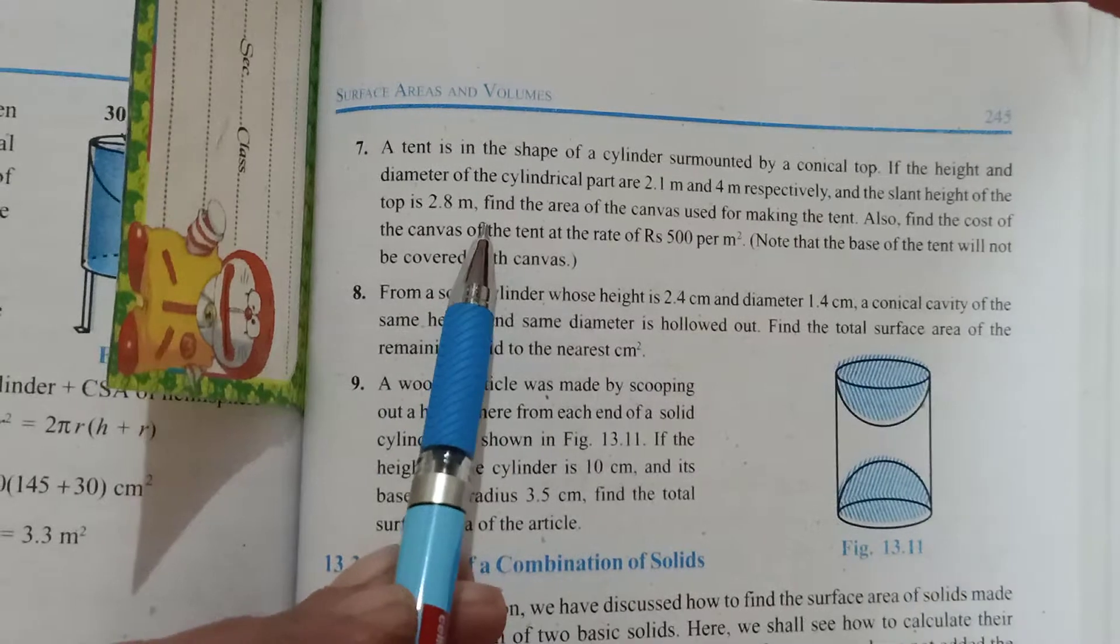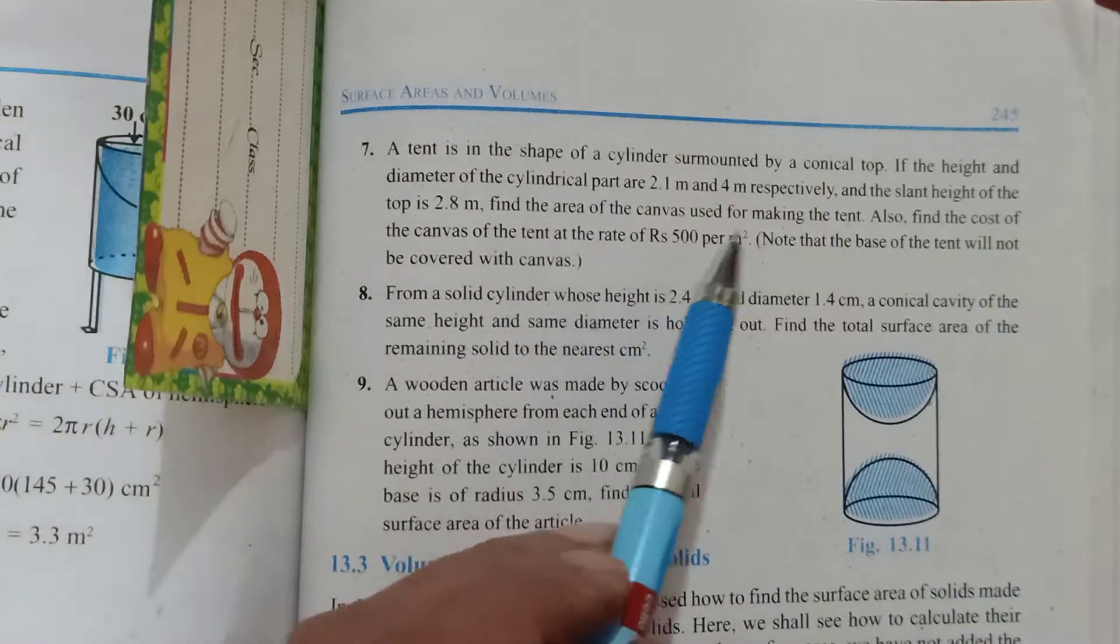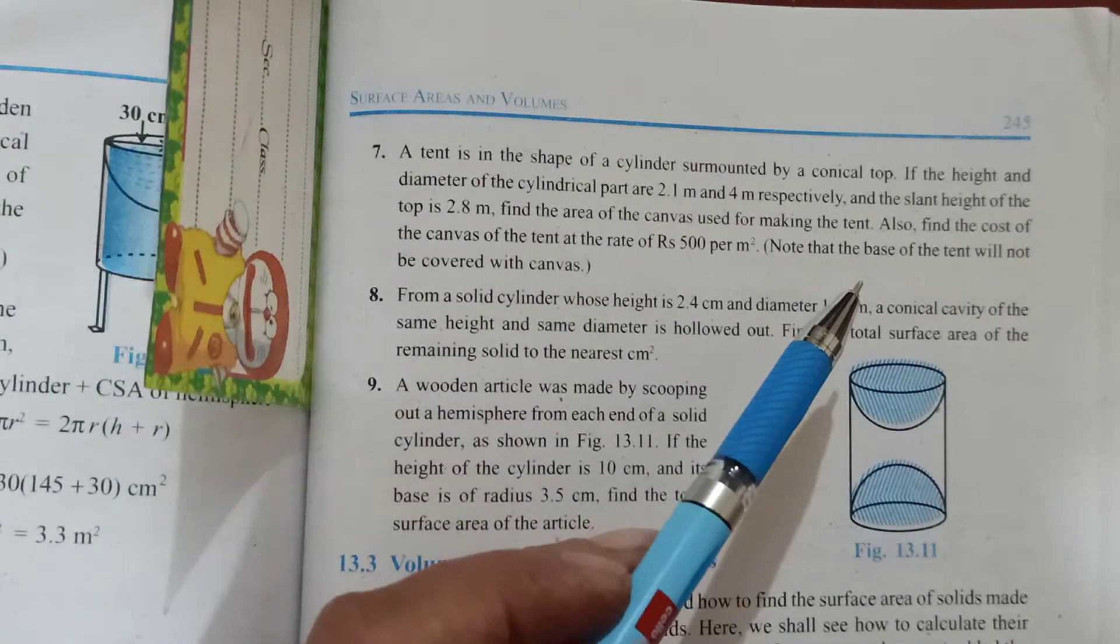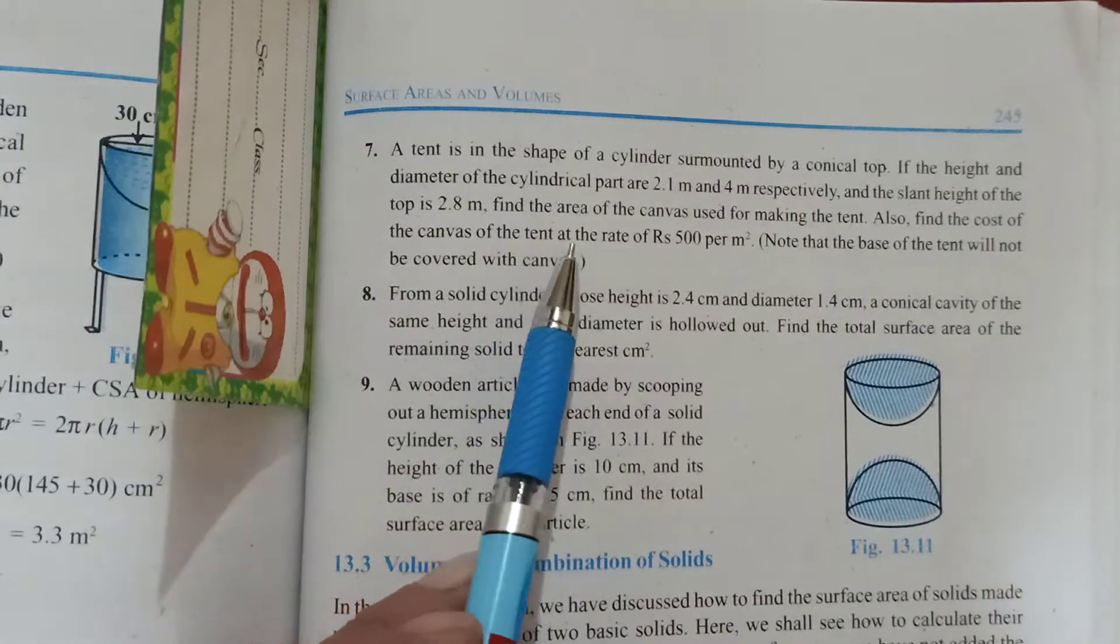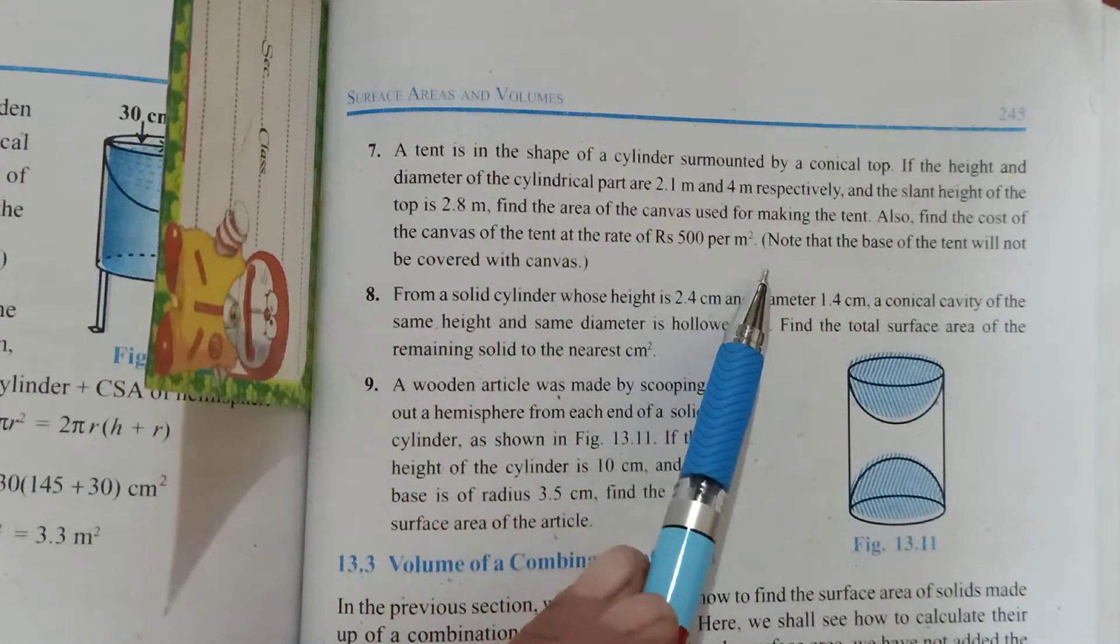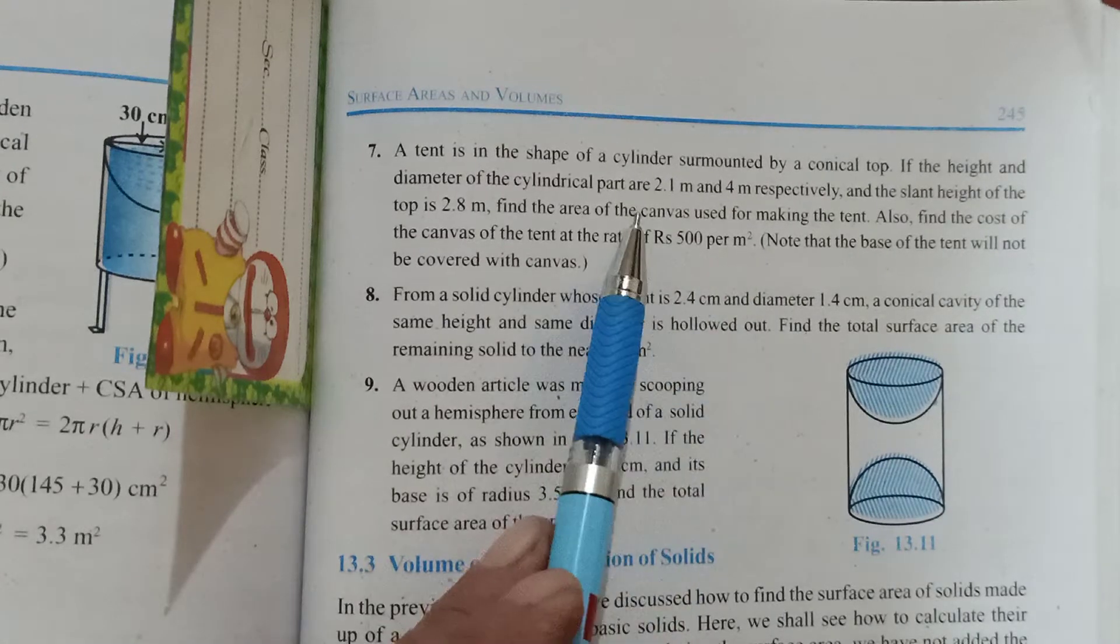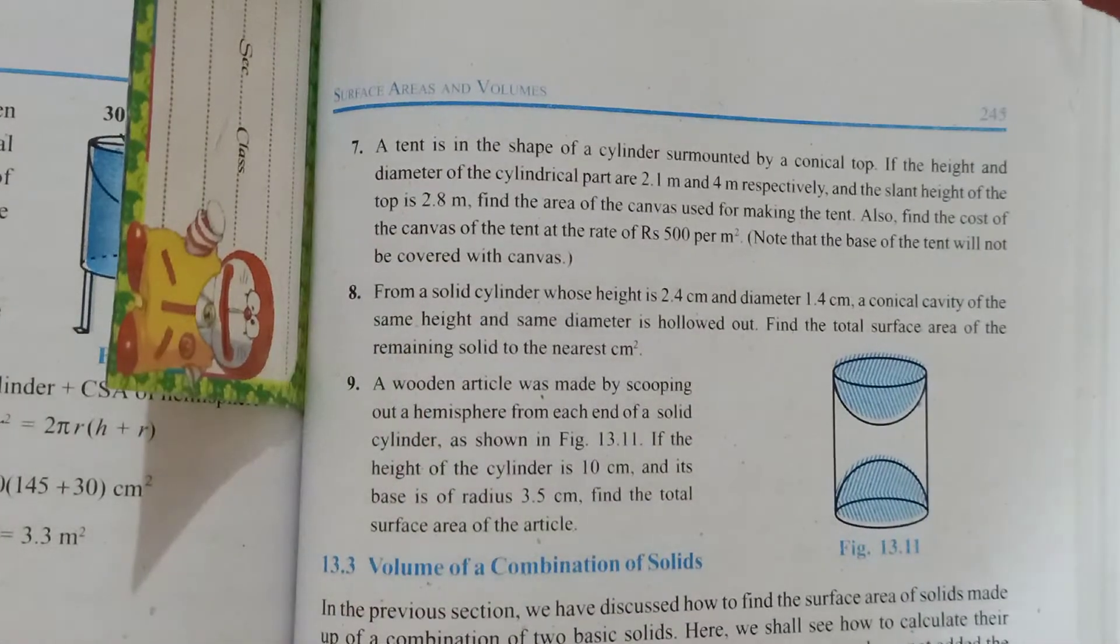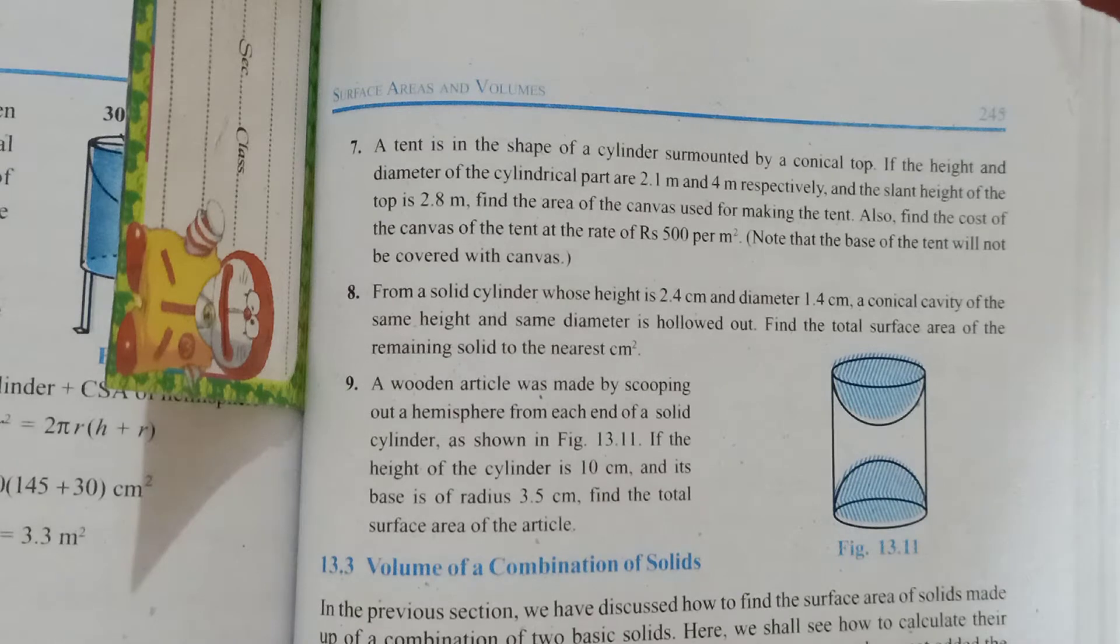You have to find the area of the canvas used for making this particular tent, and then you also have to find the cost of that canvas if the rate is rupees 500 per meter square. So, how many meters square - you have to find the area of the canvas, area is in meter square, multiplying it by 500.